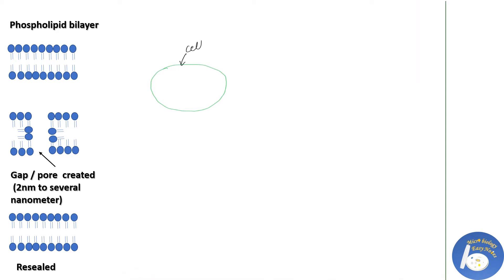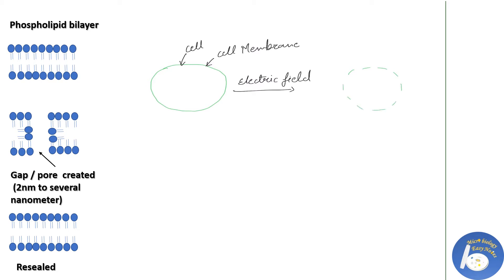Here we have a bacterial cell which also possesses a cell membrane. When we keep this cell in an electric field or apply some voltage over it — which is generally very low, around 100 volts — what happens is in the presence of electricity, the phospholipids of the cell membrane realign themselves and create a gap or pore. You can see this in the pictures on the right side of the slide — how the gaps are created. Gap size is around 2 nanometers to a maximum of several nanometers.